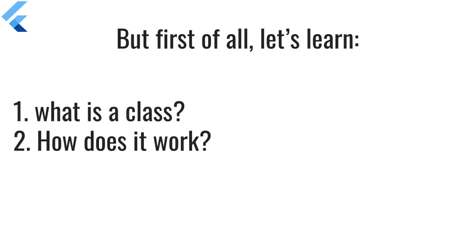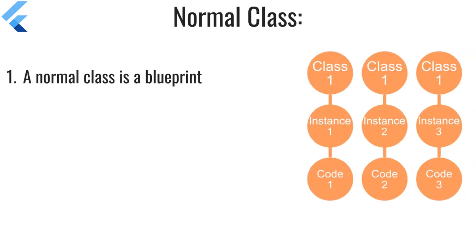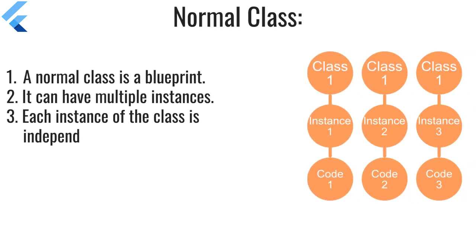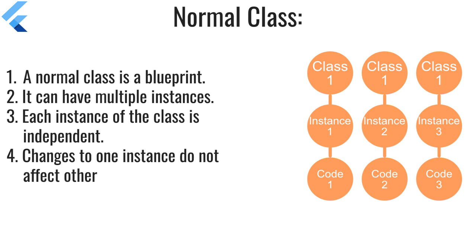But first of all, let's learn what is a class and how it works. A normal class is a blueprint for creating objects or instances in object-oriented programming. It can have multiple instances, and each instance of the class is independent, meaning it can have its own properties and state. When you create an object from a normal class, you are essentially creating a new instance of that class, and changes to one instance do not affect others.